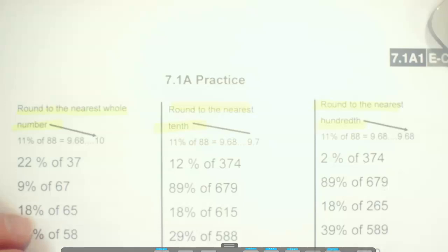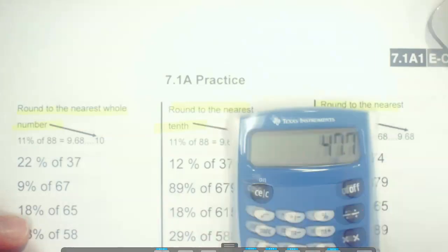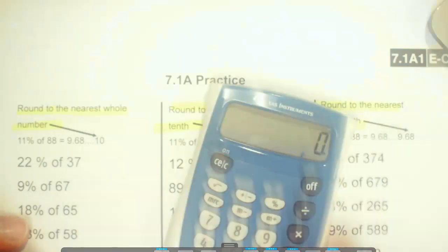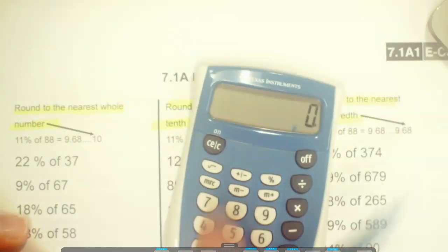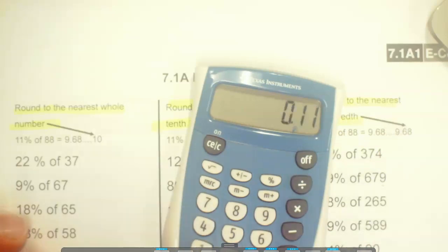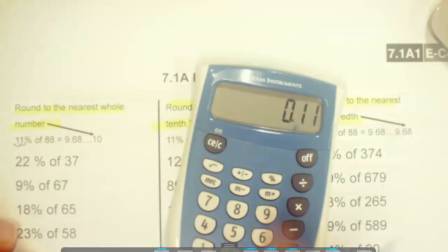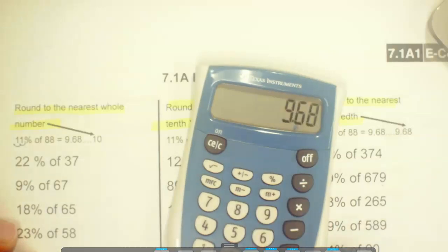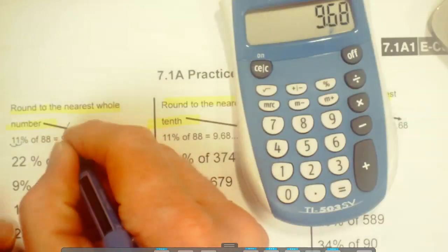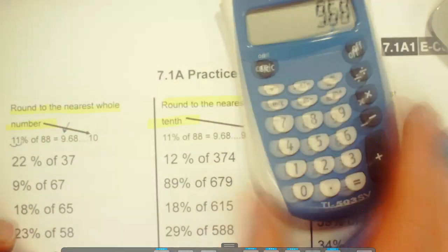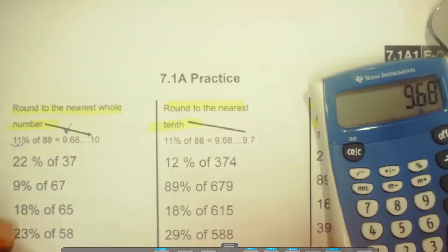You can look at the example for each one. So 11% of 88, the way we did that was we took 0.11, that's the 11%. We took that times 88, and we got 9.68. We're rounding to the nearest whole number, which means we're rounding to this spot here. And then we just look next door. Is there enough there?